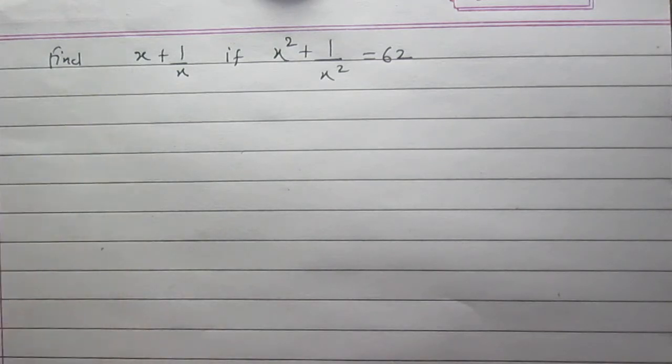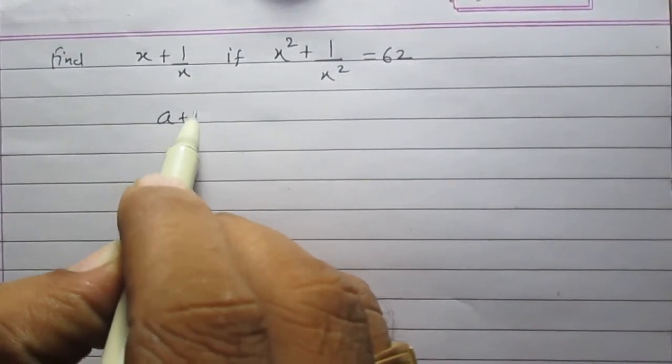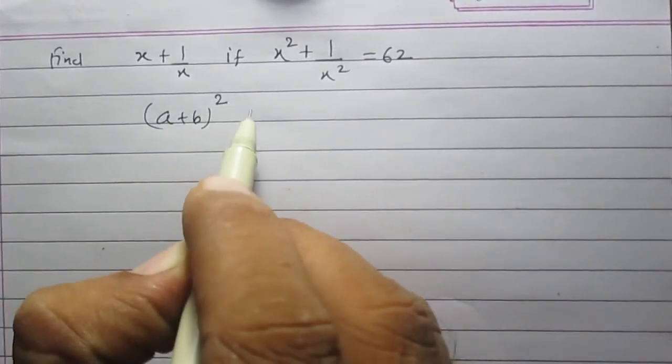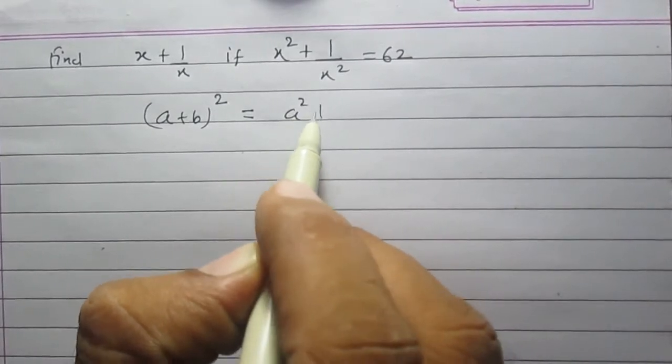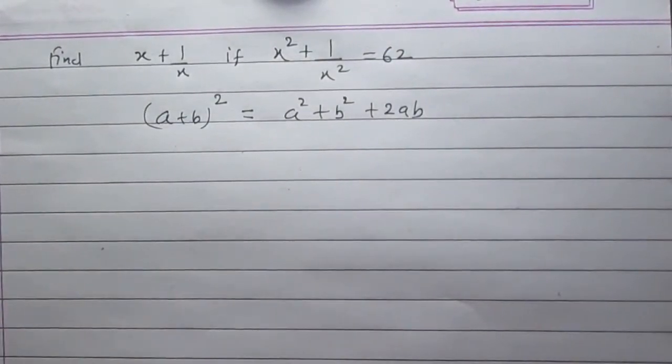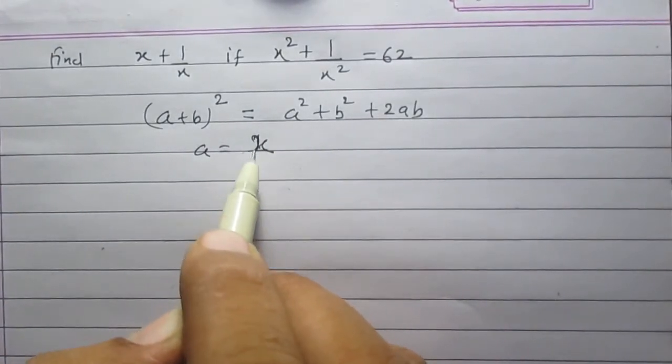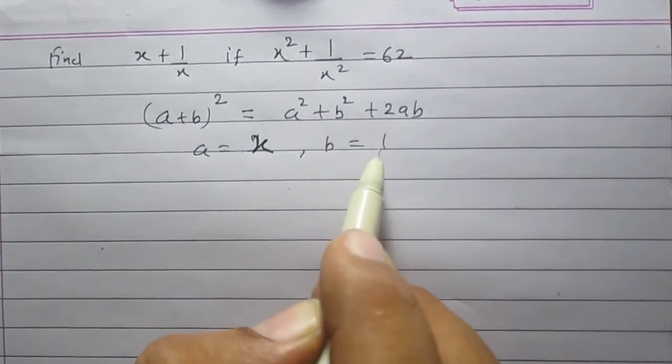So let us consider an identity: a plus b whole square is equal to a square plus b square plus twice of a b. If we take a as x and b as 1 upon x, we can proceed.